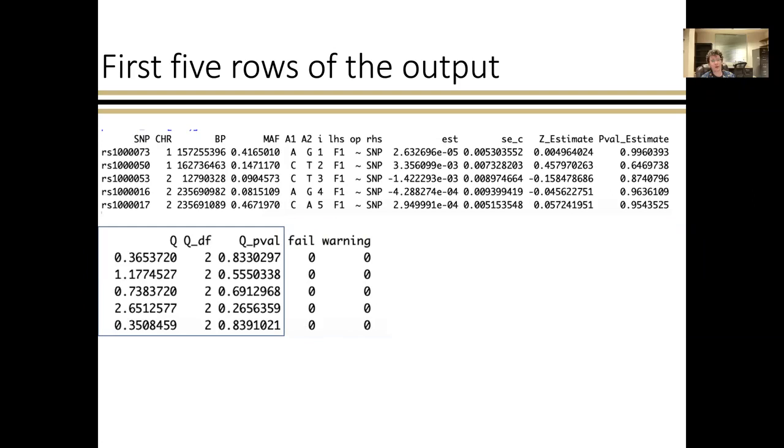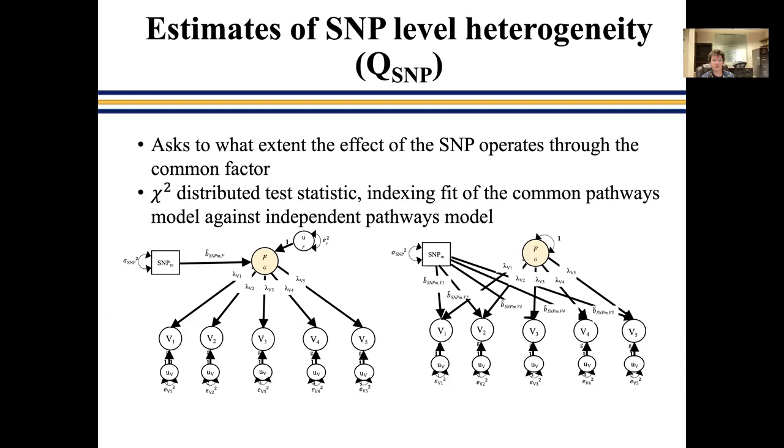So this is a chi-square distributed test statistic with degrees of freedom that are going to depend on the number of indicators in your model. That indexes the extent to which a common factor model is insufficient for accounting for the pathways from independent pathways model. So this common pathway of the SNP on the factor is really a poor representation of the independent effects of the SNPs on these individual indicators, then Q is going to be significant. So that's going to happen when you have things like a SNP that has directionally opposing effects on the indicators, or let's say the SNP has a really strong effect on one of the indicators, but not the other.